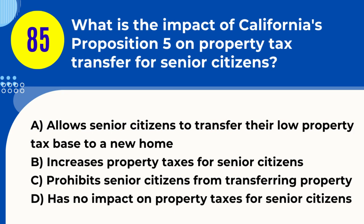Question 85. What is the impact of California's Proposition 5 on property tax transfer for senior citizens? A. Allows senior citizens to transfer their low property tax base to a new home. B. Increases property taxes for senior citizens. C. Prohibits senior citizens from transferring property. D. Has no impact on property taxes for senior citizens. Answer: A. Explanation. California's Proposition 5, also known as the Property Tax Transfer Initiative, allows senior citizens age 55 and older to transfer their low property tax base to a new home of equal or lesser value. This can provide significant tax savings, especially for those living in homes with long-standing low tax bases due to Proposition 13.